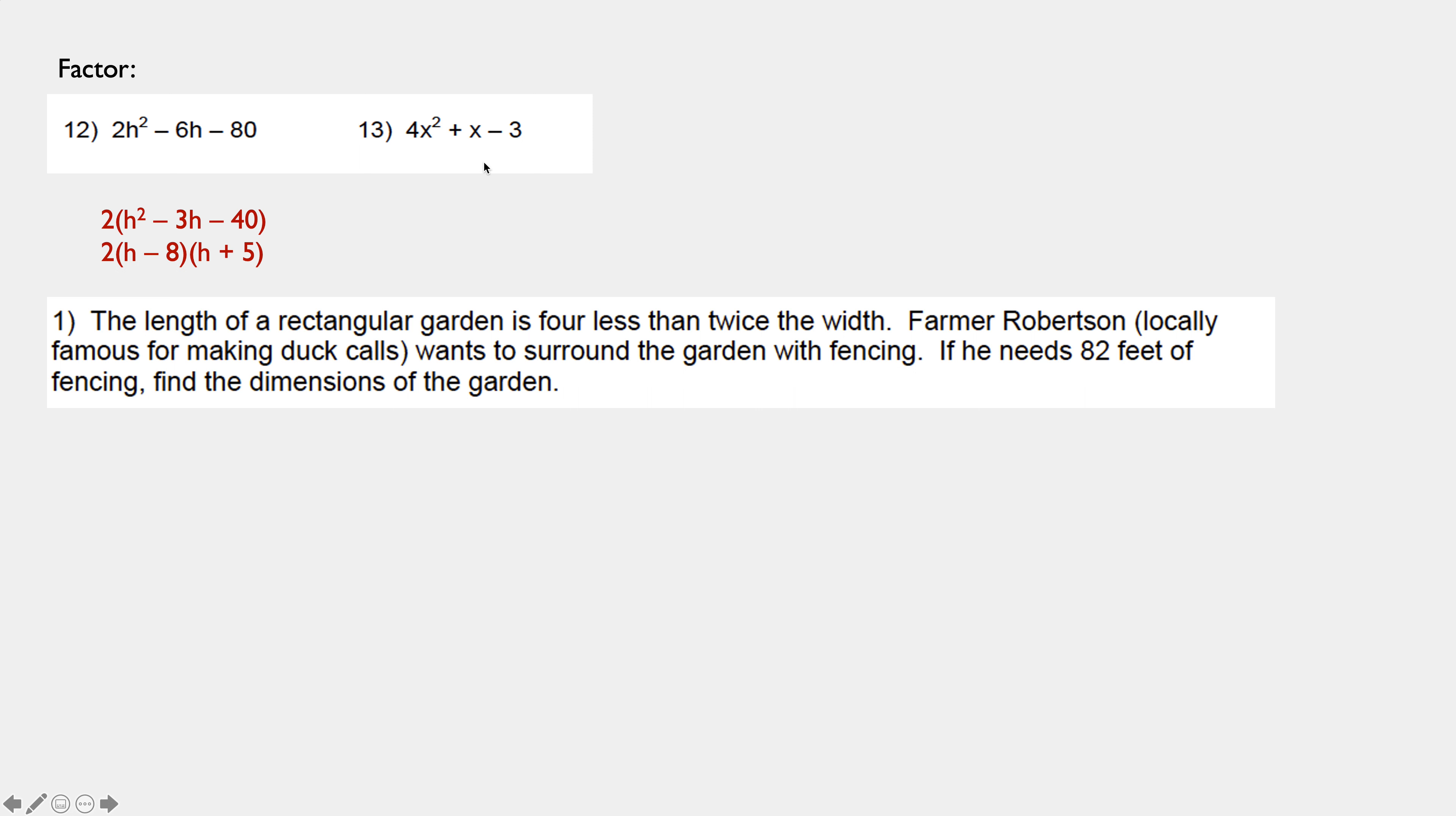For number 13, 4X squared plus X minus 3, I look for that common factor like the 2 was in number 12, and it's simply not there. So, rather than plan A, we have to go to plan B. And plan B is a technique where we take the 4 and we multiply it by the last term. That gives me X squared plus X minus 12.